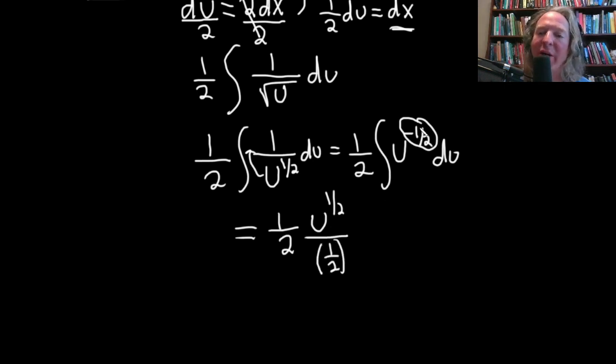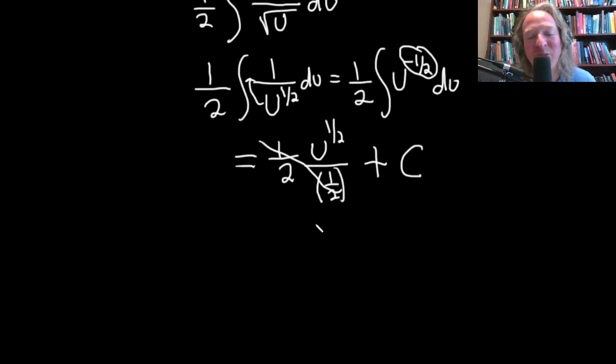You just always add 1 to whatever is there. And then plus our constant of integration, capital C. Oh, look at this. They cancel. So we have u to the 1 half, which is really the square root of u.